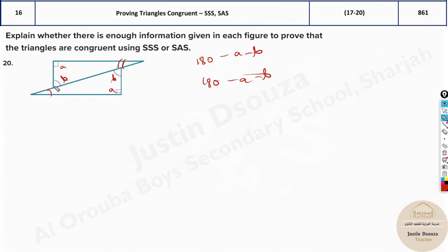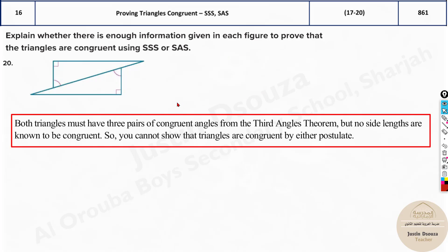So yes, this angle is the same — but are the triangles congruent? We don't have any information about the side lengths at all. So we can't say anything; there's not enough information. Both triangles have three pairs of congruent angles by the third angle theorem, since if two angles are equal the third must also be equal. But the side lengths are not known, so we cannot confirm congruency.